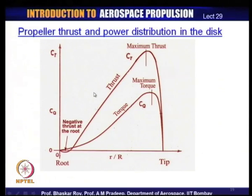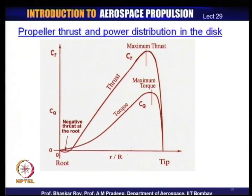This difference between an actual propeller and the actuator disc is what manifests itself in the differential between the estimated values of thrust and efficiency and the actual values one may find by experimental or other more accurate methods.